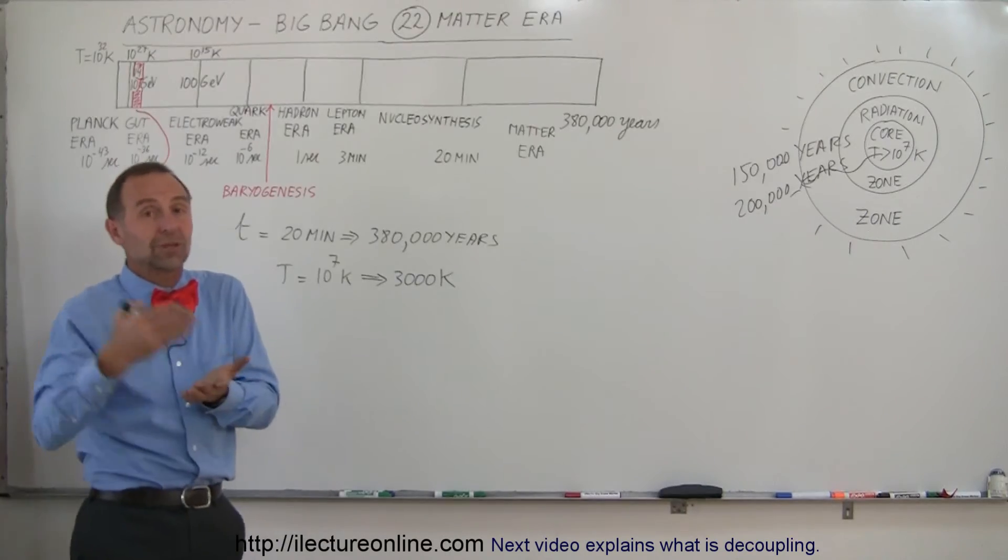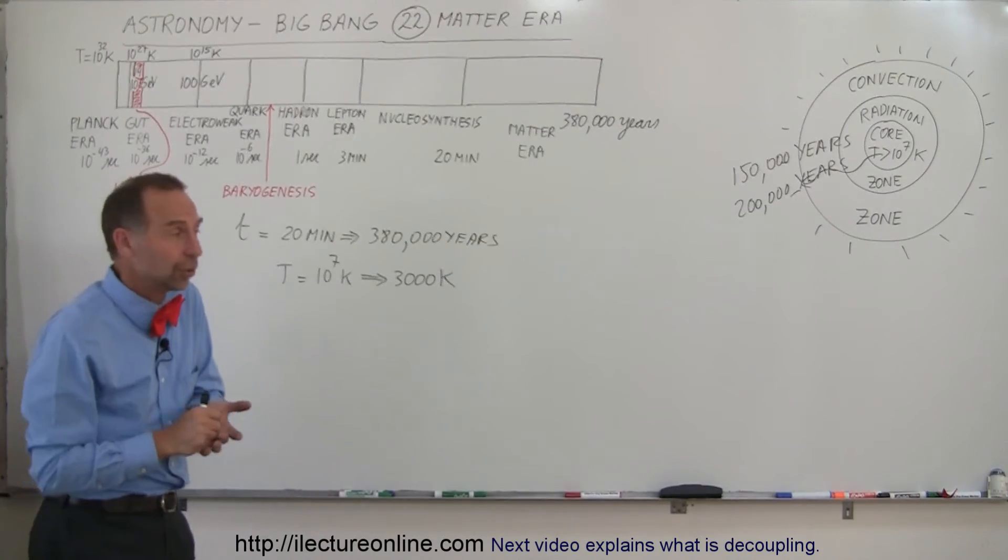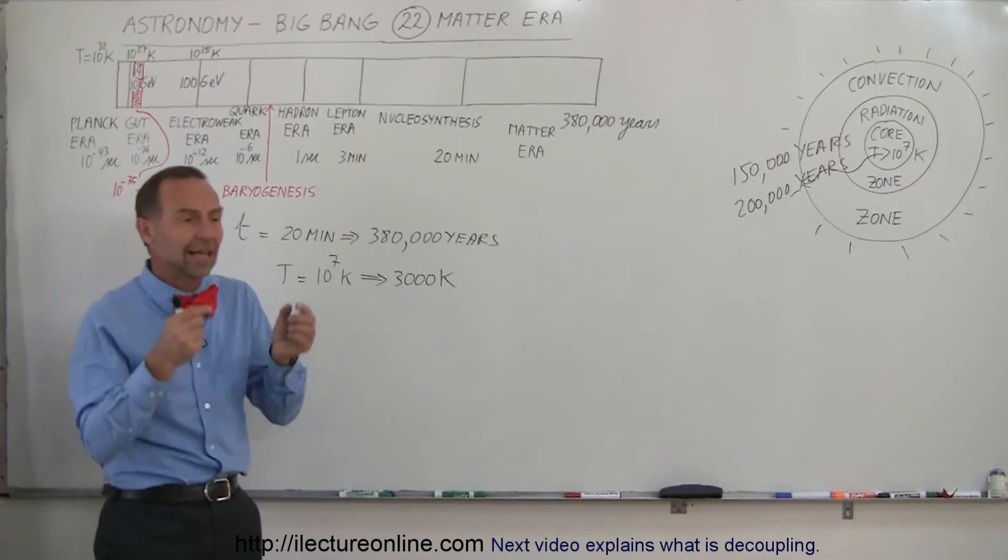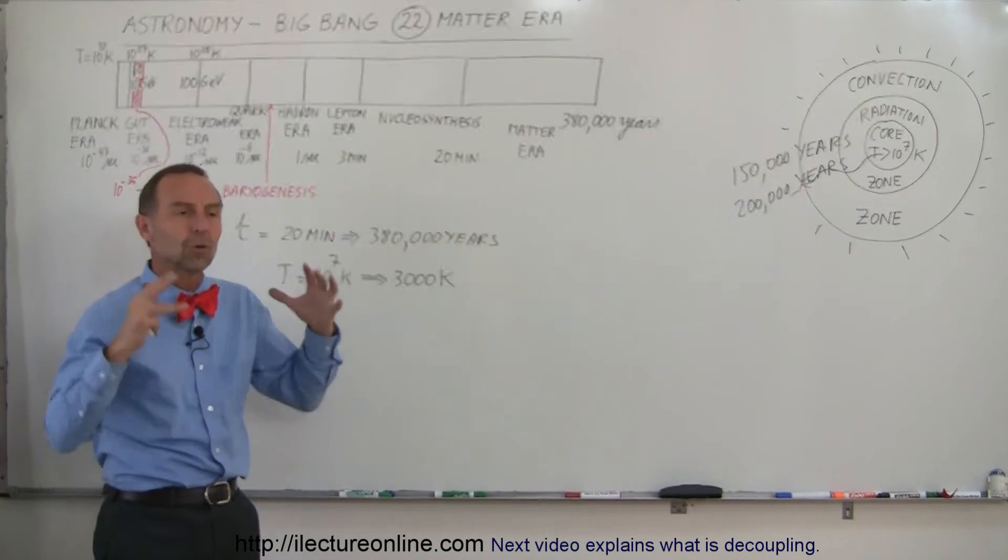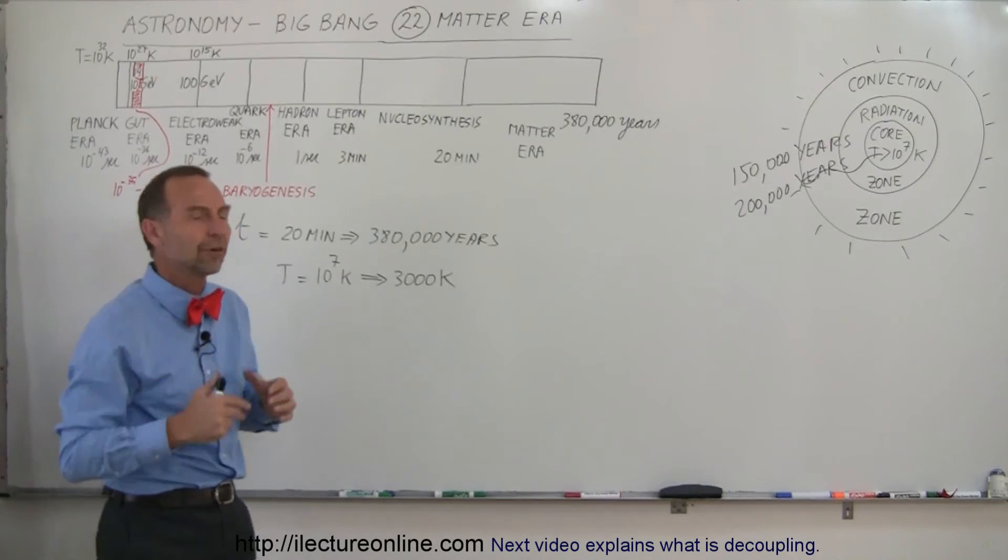Radiation in the universe normally moves at 300,000 kilometers per second or 186,000 miles per second. And in this case, it was just bouncing around everywhere and not going anywhere. So it was locked within that universe at a very high temperature.